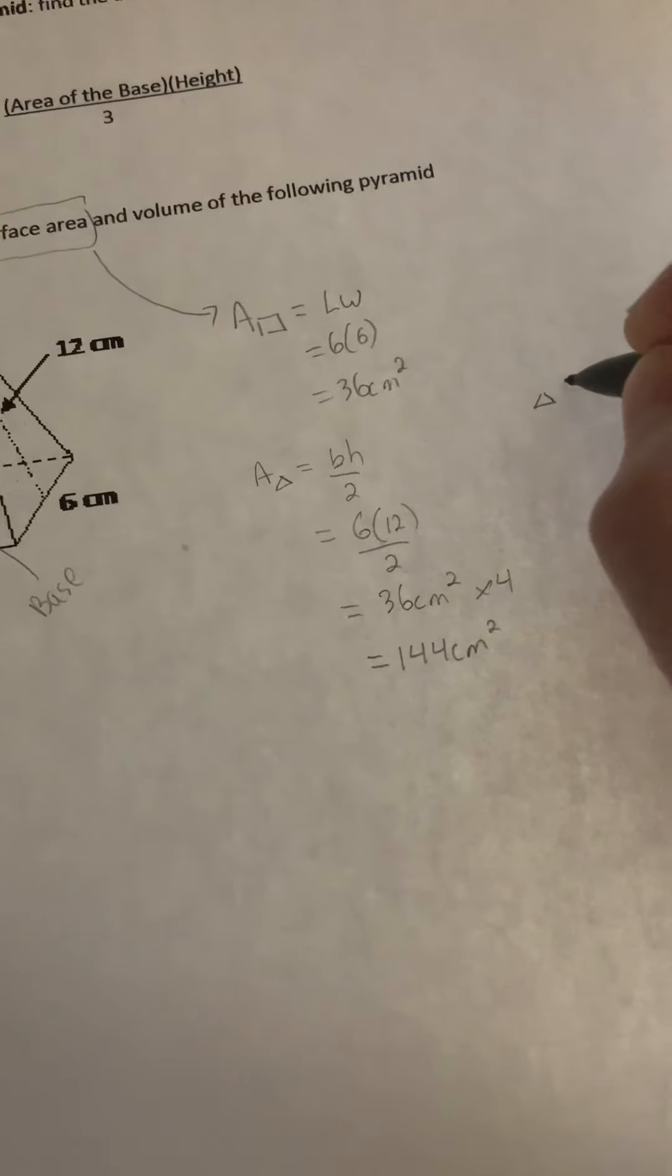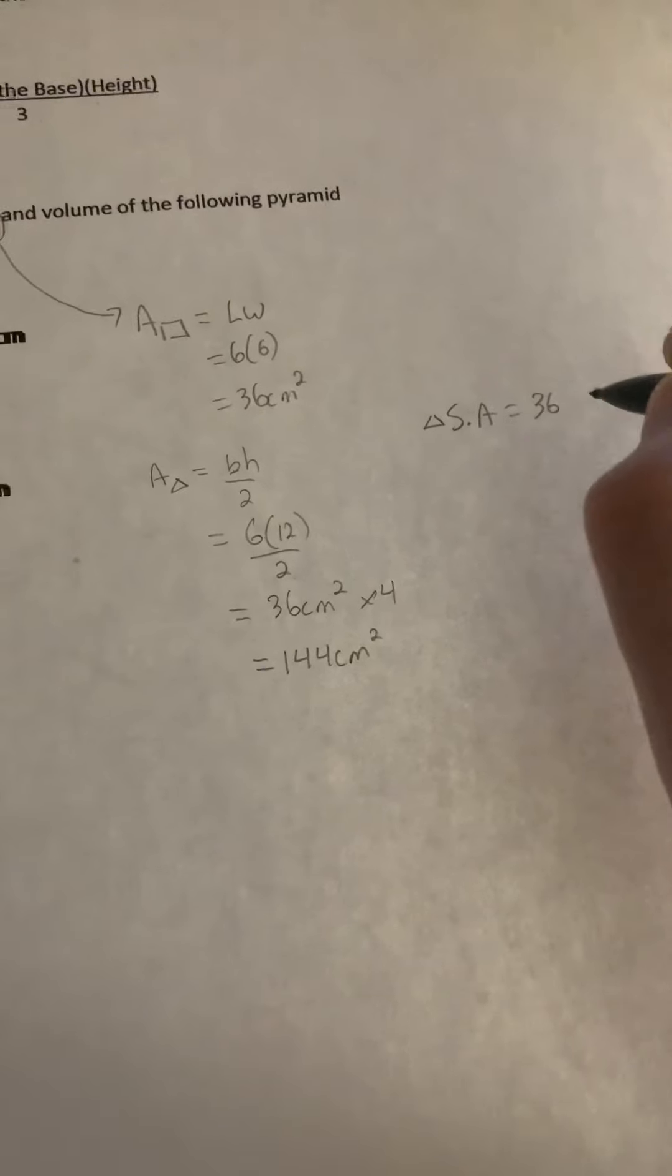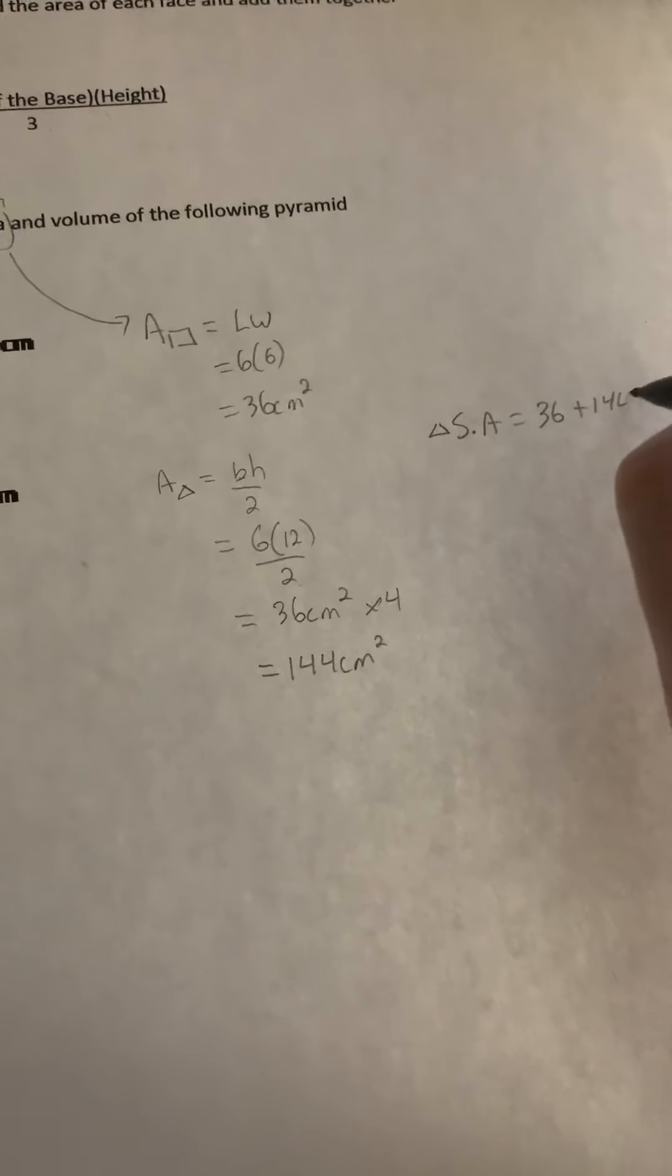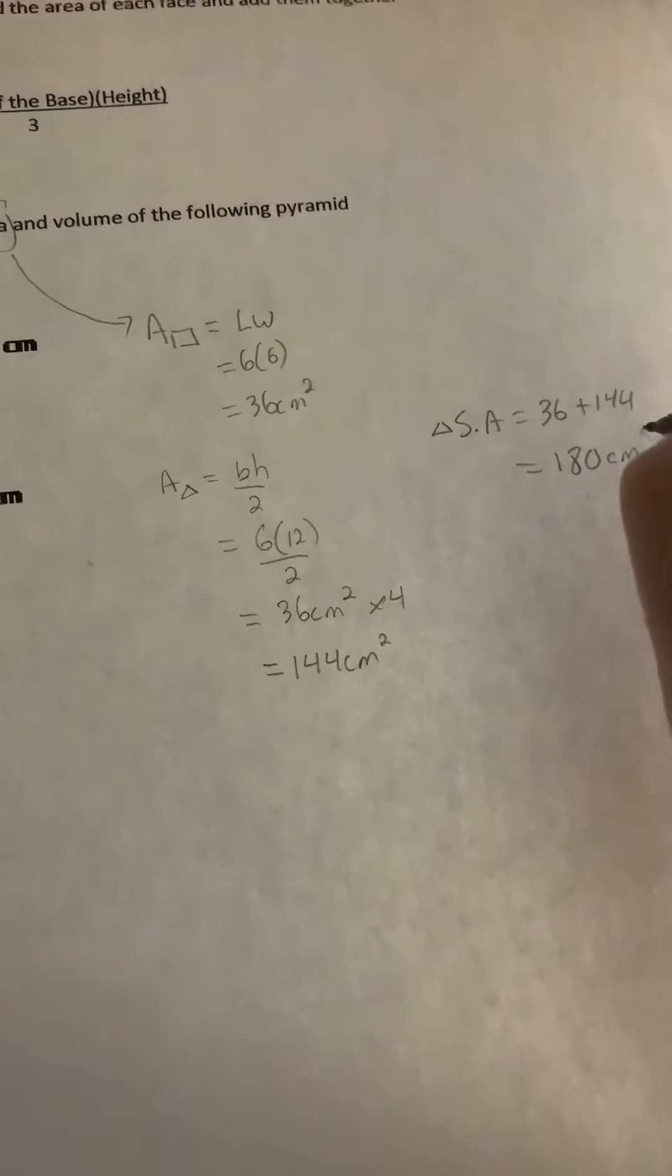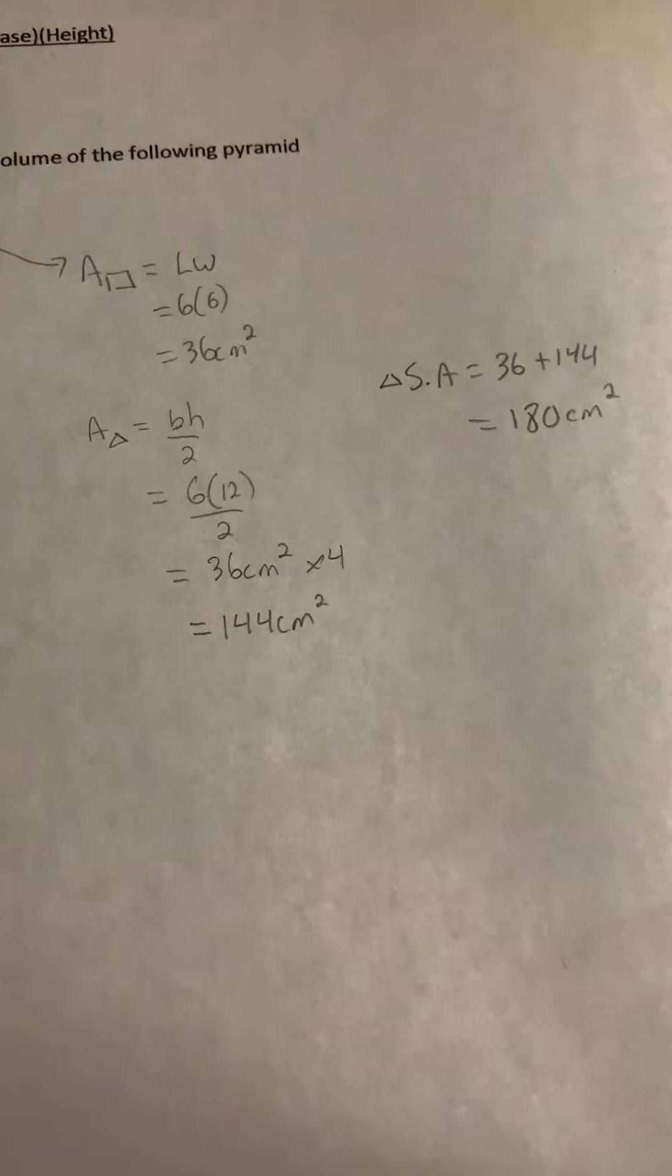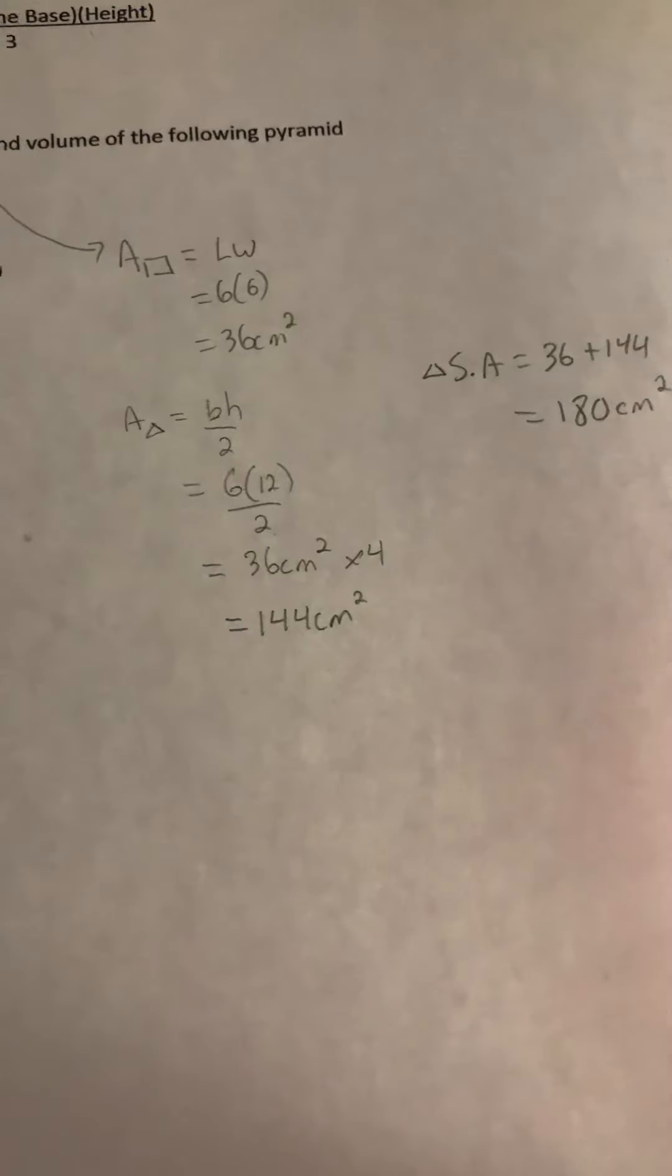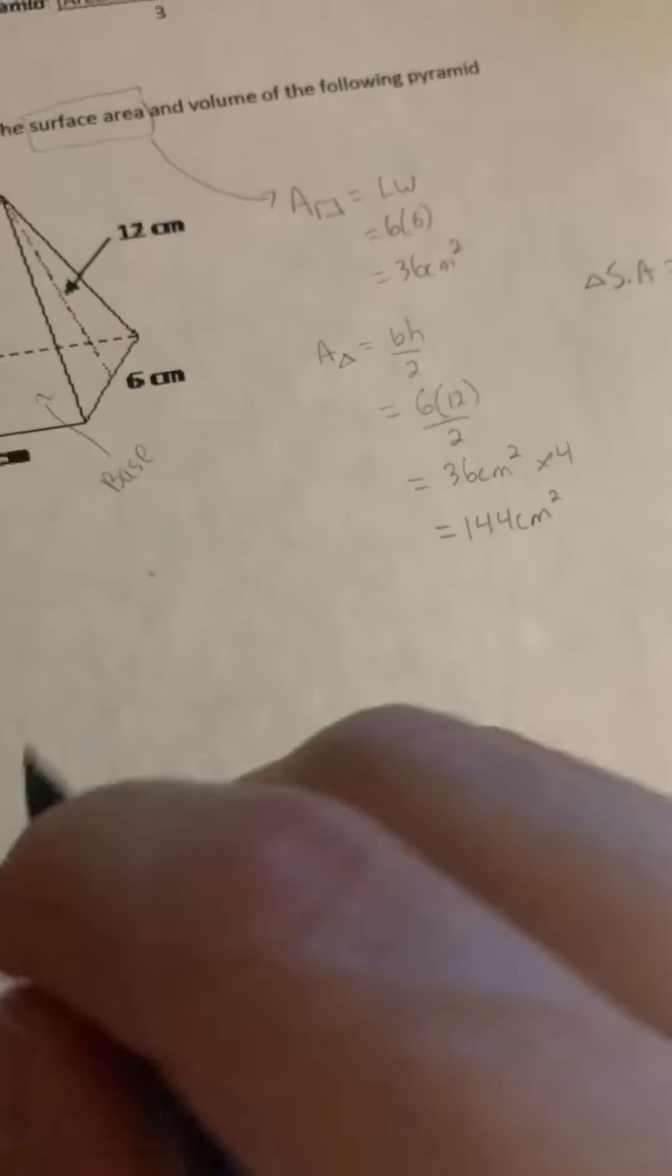So the total surface area is 36 plus 144, which gives us 180 centimeters squared. And that's all of it. So that's the surface area, now the volume.